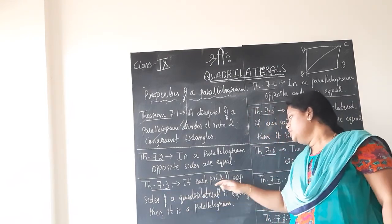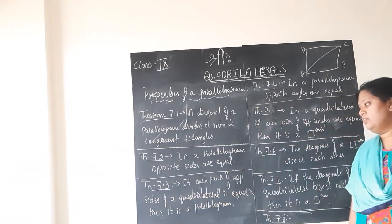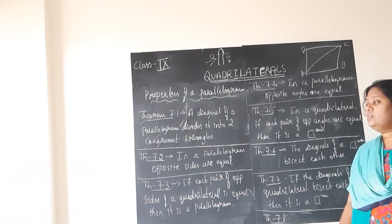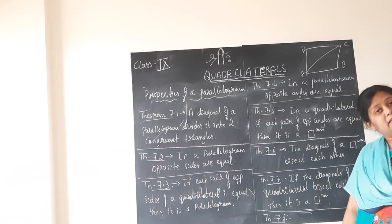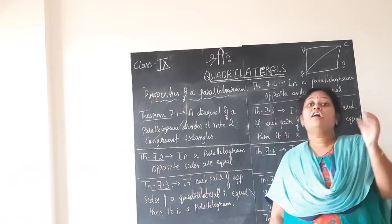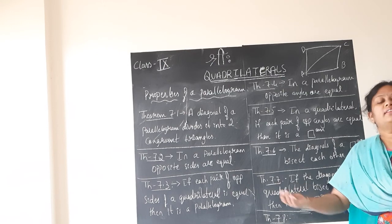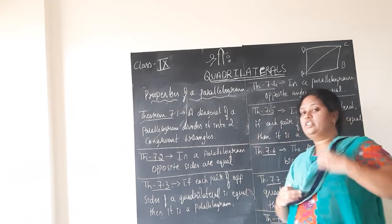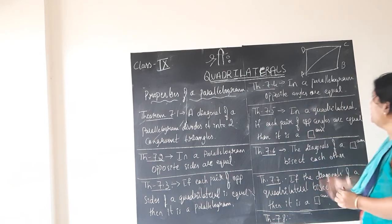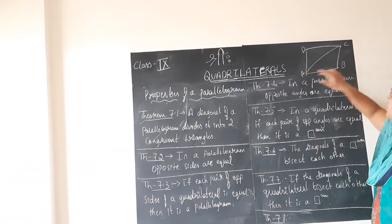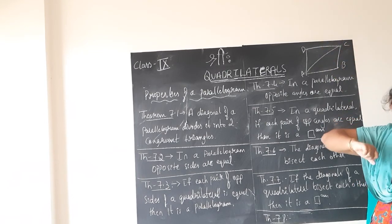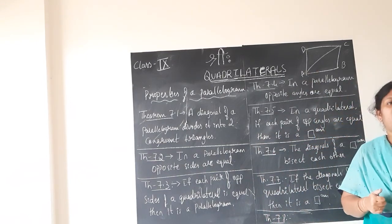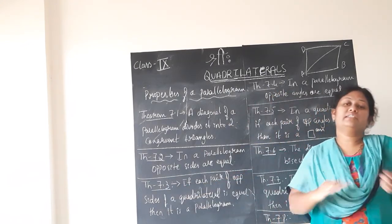Theorem 7.3 states that if each pair of opposite sides of a quadrilateral is equal, then it is a parallelogram. So it is just the converse of Theorem 7.2. There, we said in a parallelogram opposite sides are equal. Here, Theorem 7.3 states it in terms of a quadrilateral: if in a quadrilateral the opposite sides AB equals CD and BC equals AD, then that quadrilateral is a parallelogram. It is just the converse.